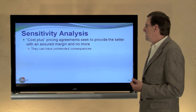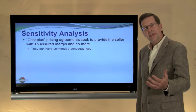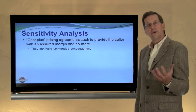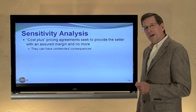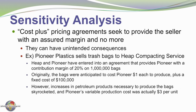Another issue to consider is cost-plus pricing agreements that seek to provide the seller with an assured margin but no more. For example, an agreement might say the selling price will be based on cost plus fifteen percent. However, those agreements can have unintended consequences. Heap and Pioneer have entered into an agreement providing Pioneer with a contribution margin of twenty percent on one million bags delivered. Originally the bags were anticipated to cost Pioneer one dollar to produce, with fixed costs of one hundred thousand dollars. Then assume there was a huge increase in the price of petroleum — a base raw material for plastic bags — so that variable production cost rose to three dollars per unit.